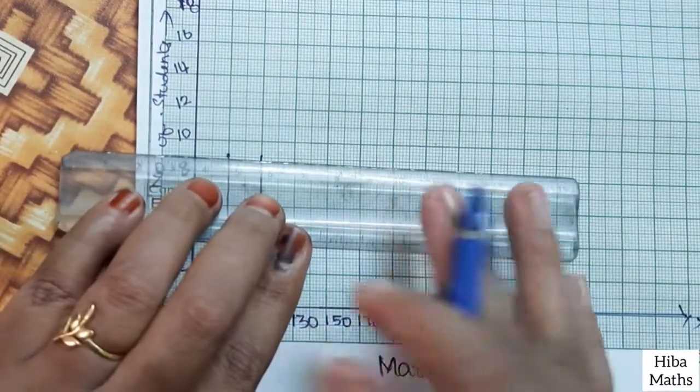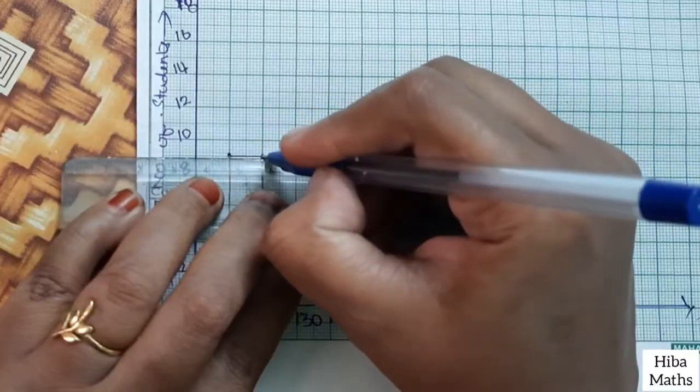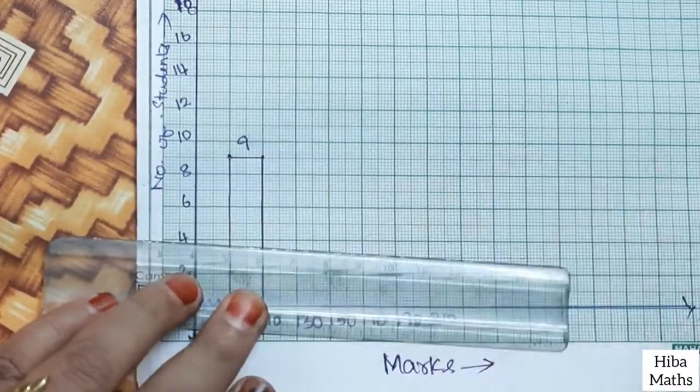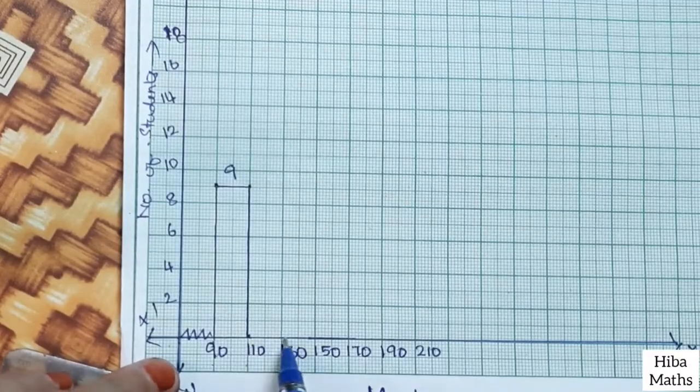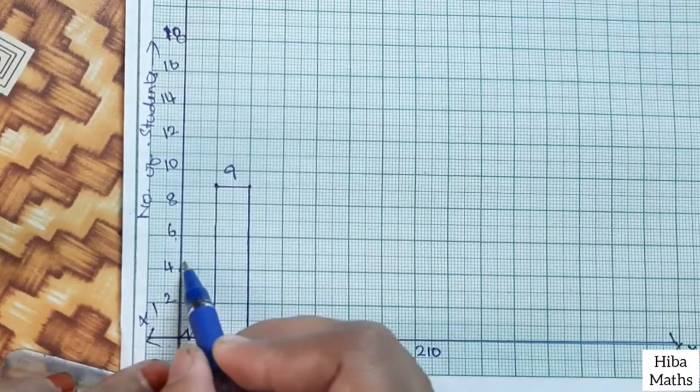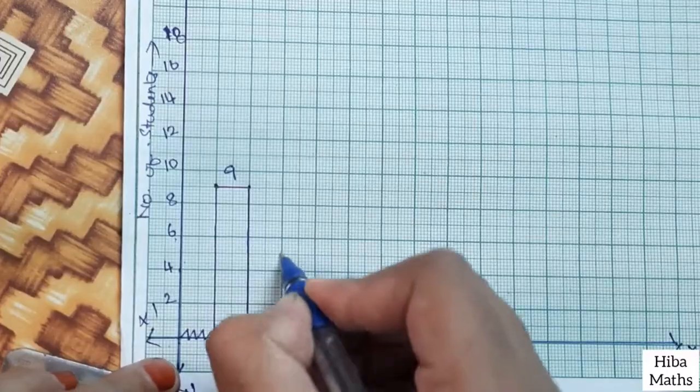Now we draw a line at 9. Now we plot the line at 110 and 130 equals 5. Now 4 and 6 are equal to 5.